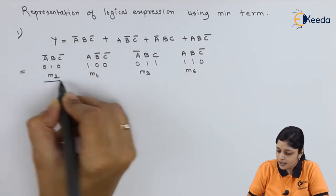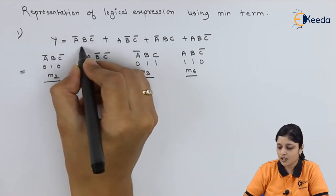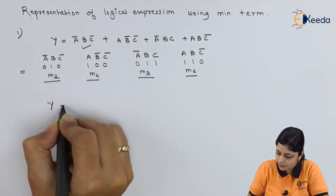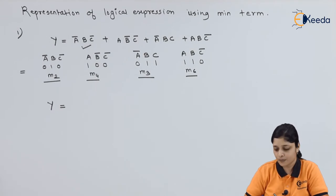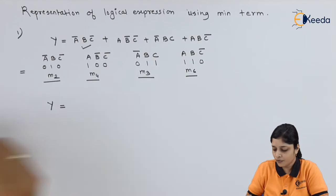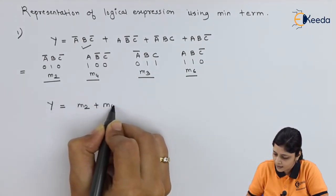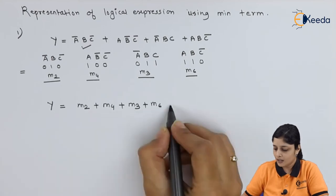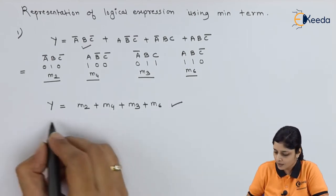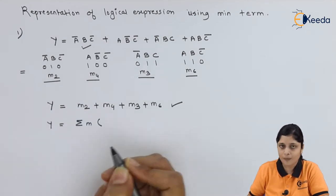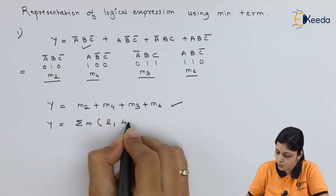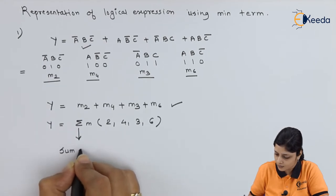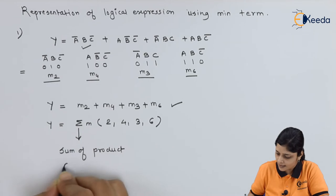In this way you collect all minterms for each term present in the given logical expression. This is another way to represent this equation considering the minterms. You write y equals m2 plus m4 plus m3 plus m6, and finally you can write summation m with bases 2, 4, 3, 6. This summation sign denotes sum of products, that is SOP.